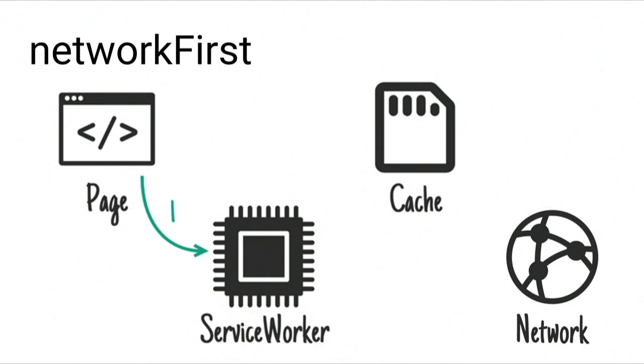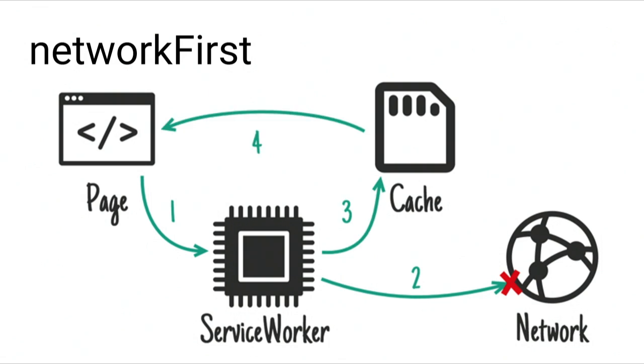As an alternative, you could use network-first. This one tries the network, and only if that fails do we go to the cache and return the response. Again, if the network succeeds, this will update the cache. Because it goes to the network first, when you are online you get the latest resource. This is good for stuff that should be fresh if you can get it, but that you still want to work offline — for example, your latest tweets or the emails in your inbox.